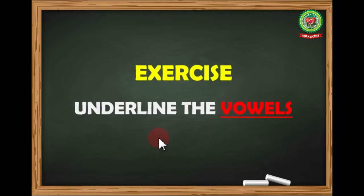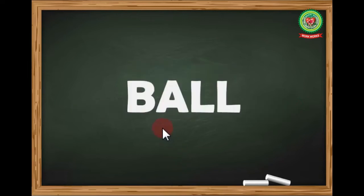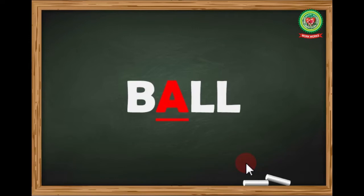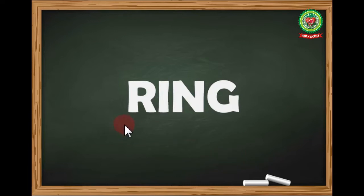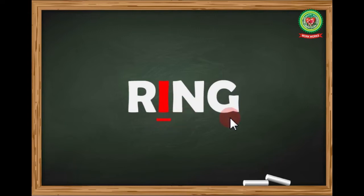Let's start Exercise One. You have to underline the vowels in the given words. Our first word is 'ball' — B, A, L, L. The vowel in 'ball' is A. Our next word is 'ring' — R, I, N, G. The vowel in 'ring' is I.